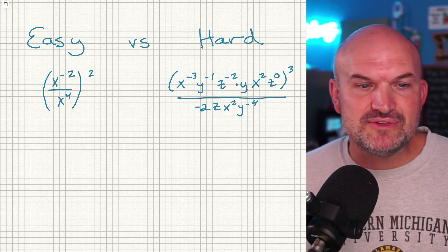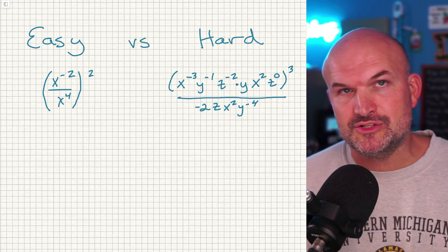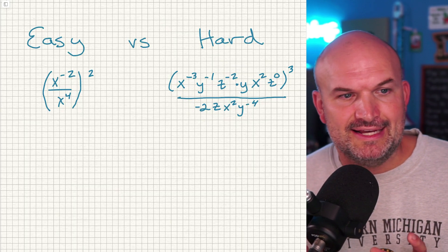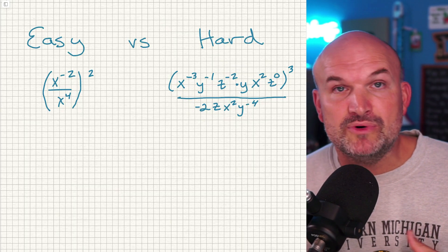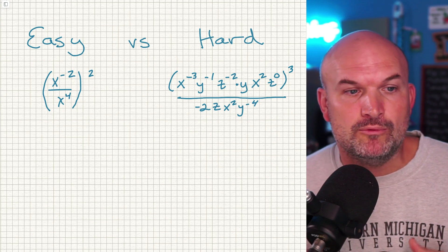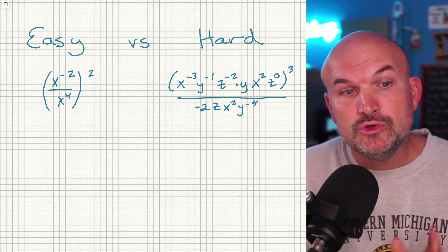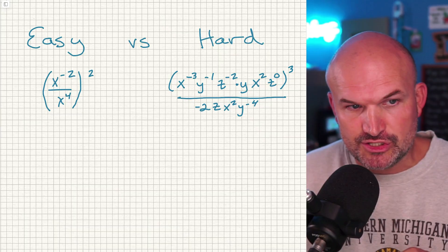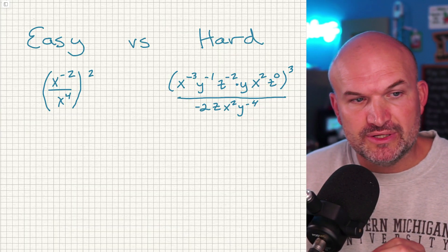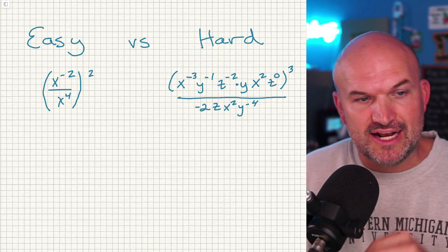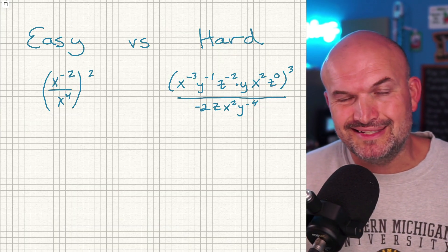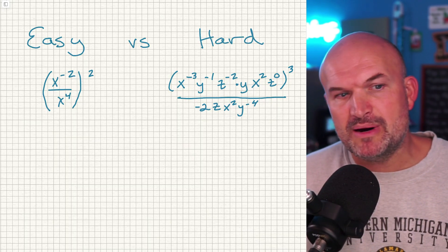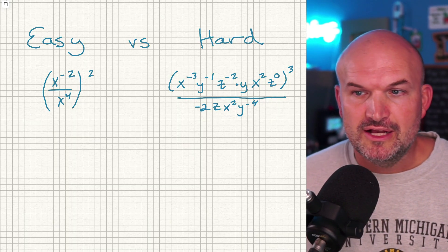If I'm simplifying this expression, I always tell my students to go ahead and simplify what's inside the parentheses first. You could apply the power to quotient rule first, which would take this two and square the numerator as well as the denominator. But the way I'm going to approach this problem is to simplify the inside first.